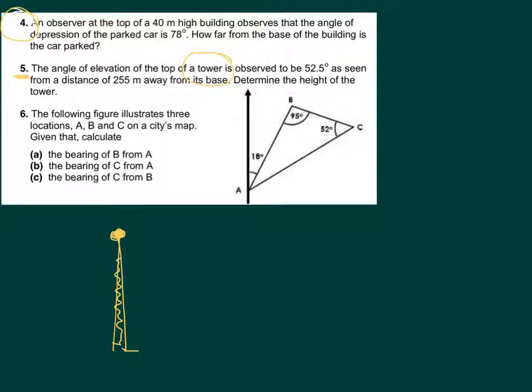So somewhere here, about 255 meters away, if there is a person looking at the top of the tower, this is the line of sight. The angle made from the ground to this line of sight is 52.5 degrees.